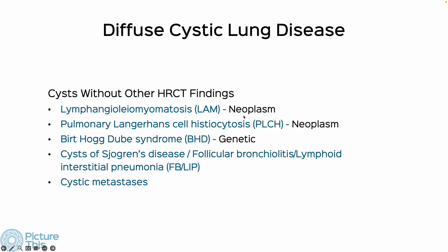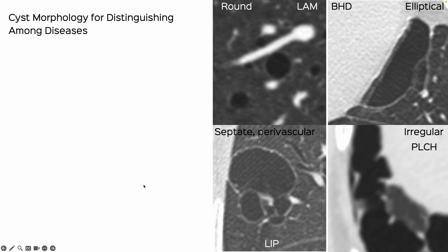For cysts-only disease, you have lymphangioleiomyomatosis (LAM), a neoplasm; pulmonary Langerhans cell histiocytosis (PLCH), also a neoplasm; Birt-Hogg-Dubé syndrome, now called folliculin-associated ILD, which is genetic; cysts of Sjogren's disease or follicular bronchiolitis; lymphoid interstitial pneumonia (LIP), associated with connective tissue disease; and cystic metastases. Cyst morphology matters: round well-defined cysts suggest LAM; elliptical paramediastinal cysts suggest BHD; septate perivascular cysts suggest LIP; and very irregular bizarre cysts suggest PLCH.